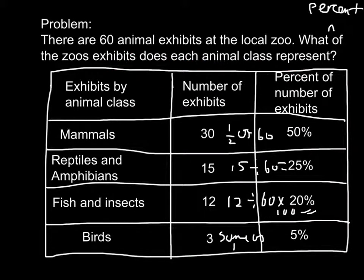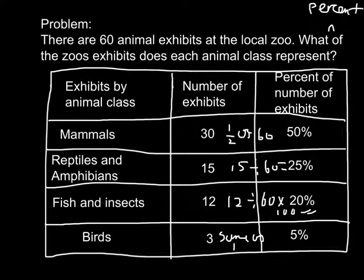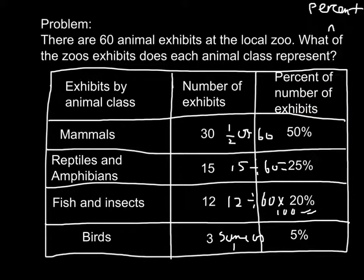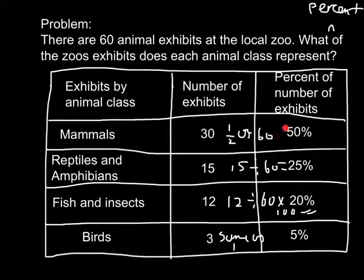To do this, I have made a table with the exhibits by animal class, the number of exhibits, and the percent of number of exhibits. My teacher actually handed out this work on a paper, but I am just showing you guys how to do it.